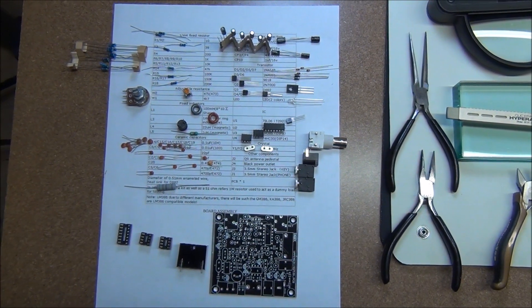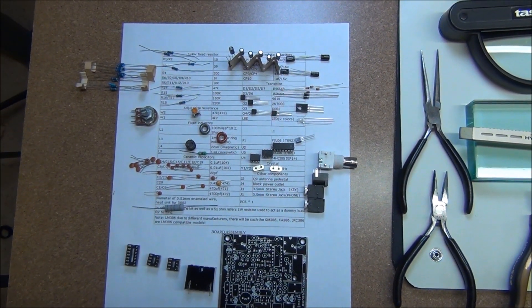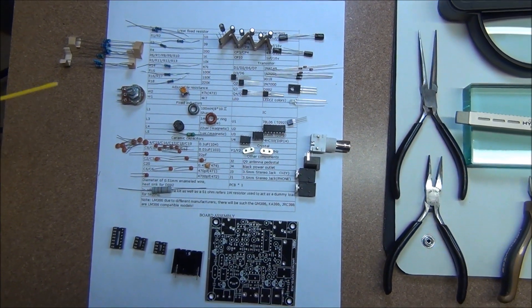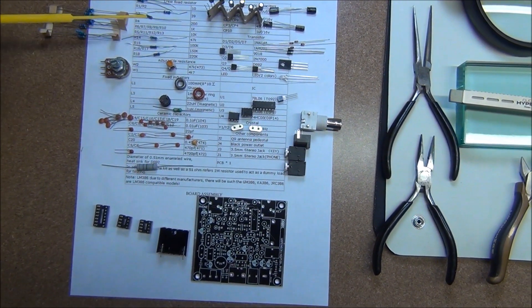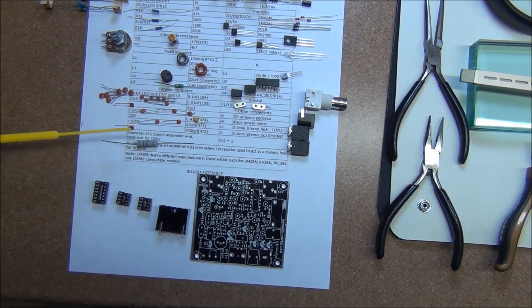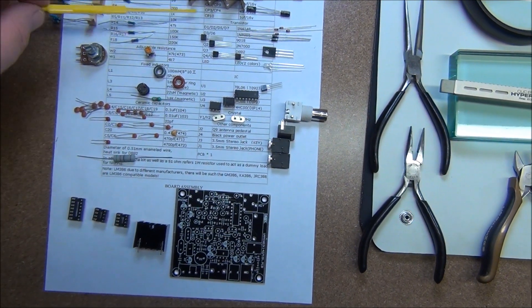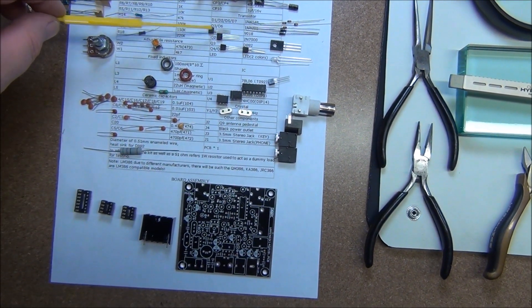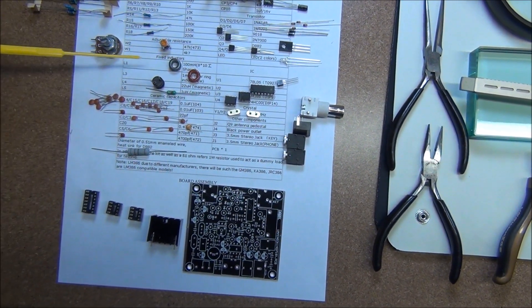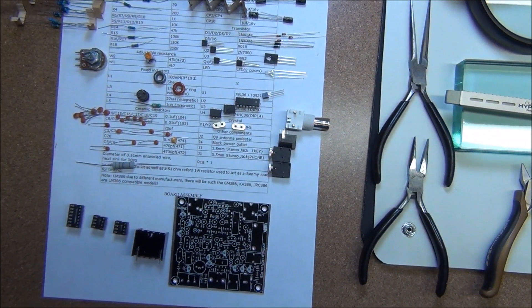This is part two of the Frog Sound QRP CW kit build. The first thing I did was take the bill of materials, print it out, and go through each of the components - the resistors, capacitors, transistors, chips, and all the components - and match them up.